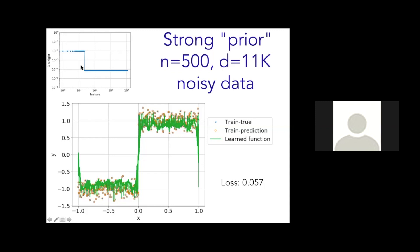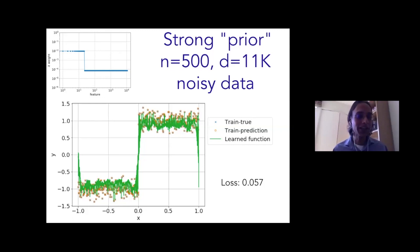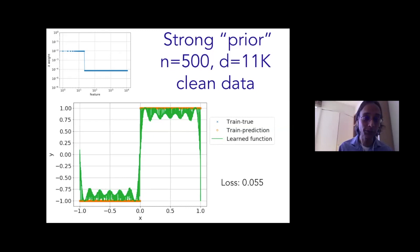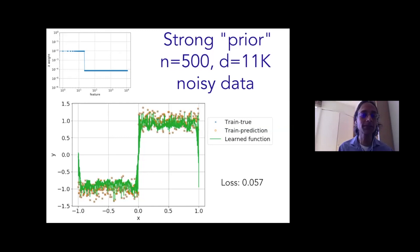A natural question: how is this different from just fitting with the first 20 Fourier features? The result is visually almost indistinguishable from fitting the first 20 features. But crucially, this approach interpolates all 500 data points perfectly, while fitting only the first 20 features would not interpolate the noisy data. For the purposes of understanding deep learning, the question of whether interpolation matters is important — for now I'm constraining myself to the interpolating regime.